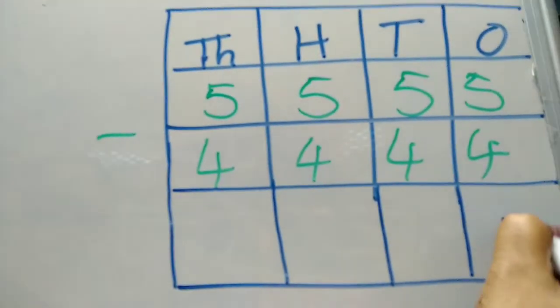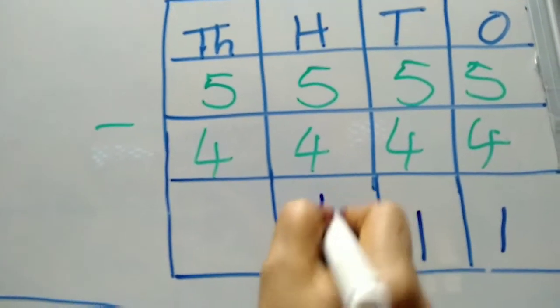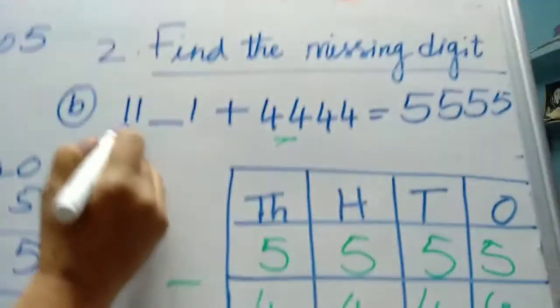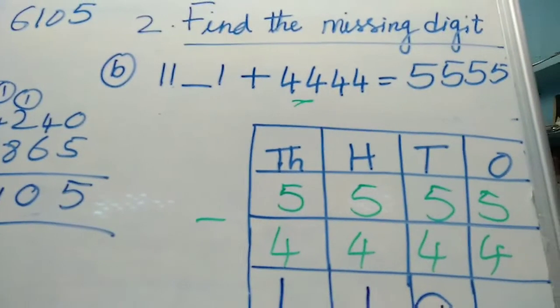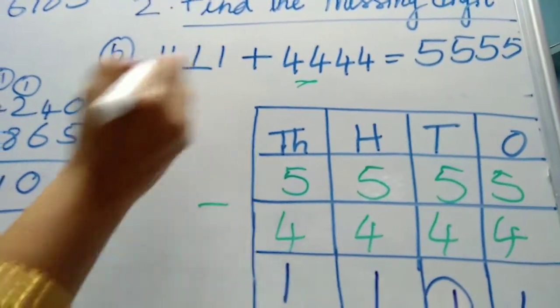What you will get. 5 minus 4 is 1, 1, 1, 1. So here they gave 1, 1. So here this 1 is missing. So we have to write here 1, 1, 1, 1.